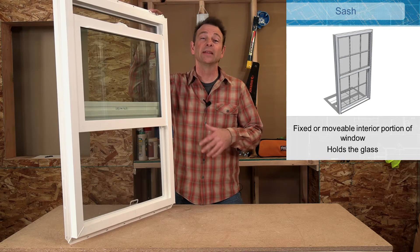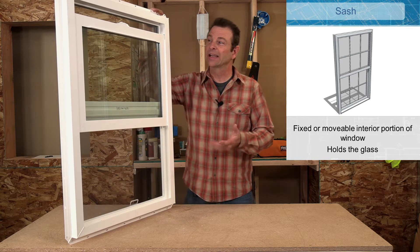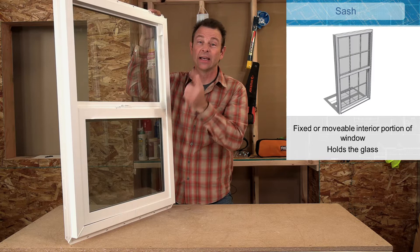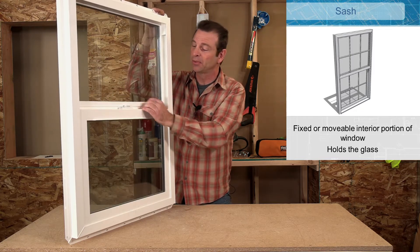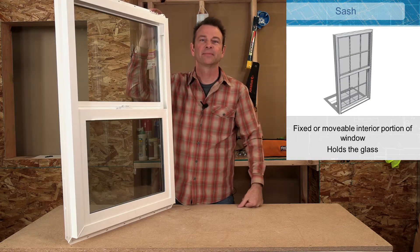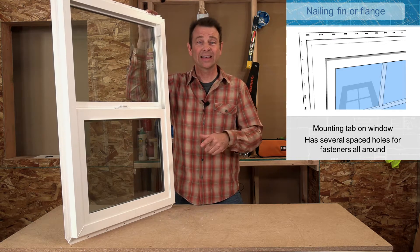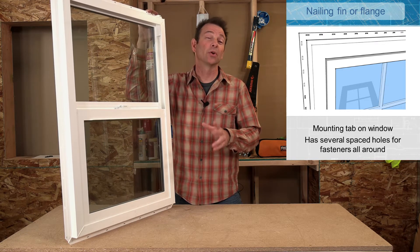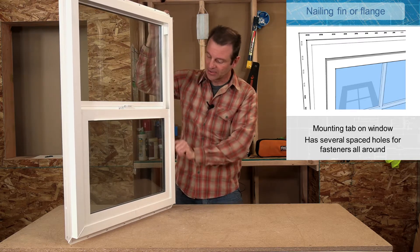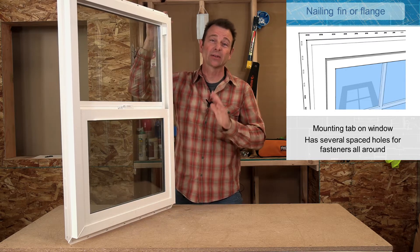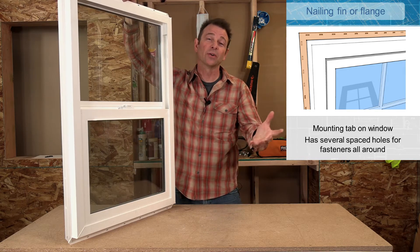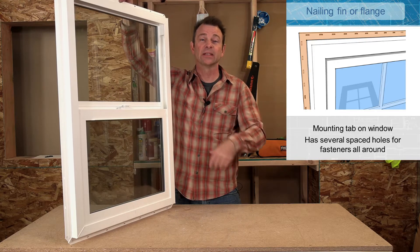Inside of the window frame will be the sash. The sash is what holds the glazing. It's another frame, but you can either have an operable sash or a fixed sash. In this case I have one moving or operable sash and I have one fixed sash — this one is connected to the frame permanently. Another really important part connected to the window frame is the flange, or you might hear it called the nail fin. This is a thin part that wraps all the way around and your fasteners go through it to connect the window to the building.